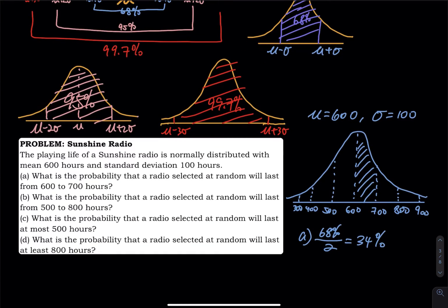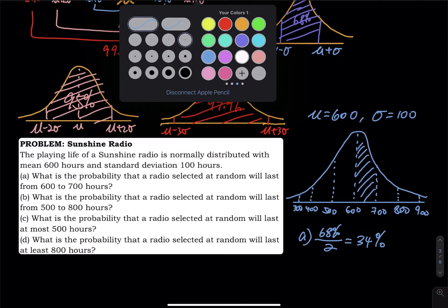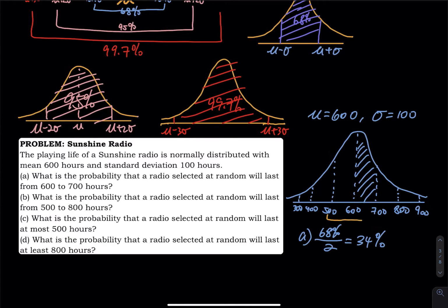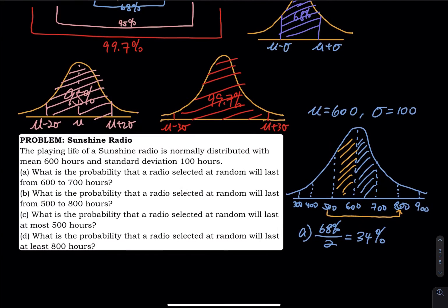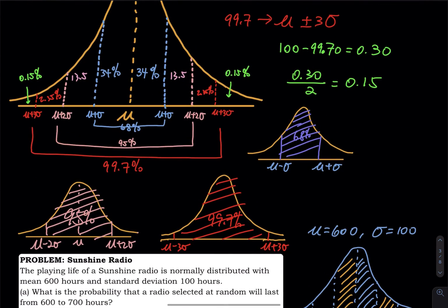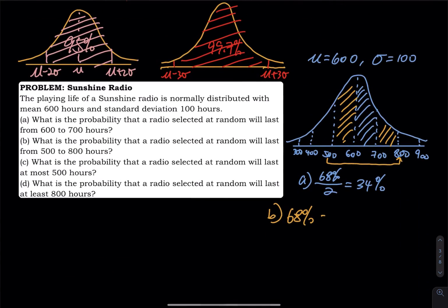Part (b) asks for the probability from 500 to 800. You take the orange, yellow, and blue regions — that is 68% — and then add one more piece of 13.5%, so 68 + 13.5 = 81.5%.